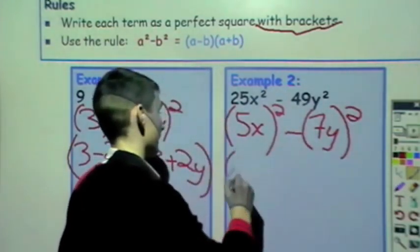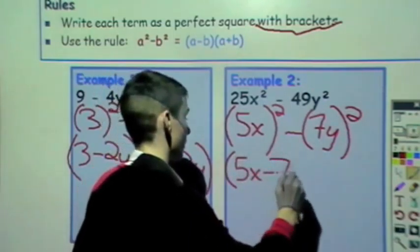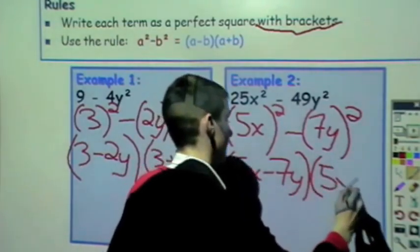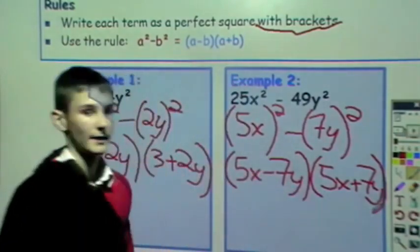Now we bring 5x and the 7y down. So it's 5x minus 7y and 5x plus 7y. And that's our answer.